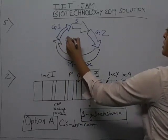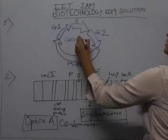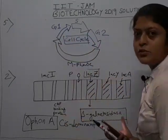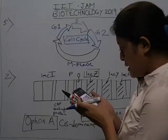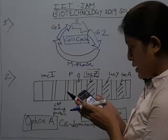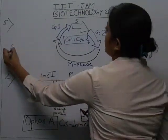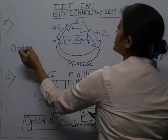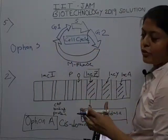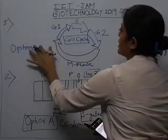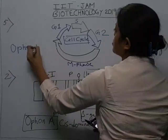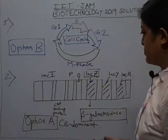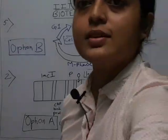So which option is it going to be? G1, S, G2, and M — this is going to be option B. Option B matches our diagram exactly, so option B is the correct option.